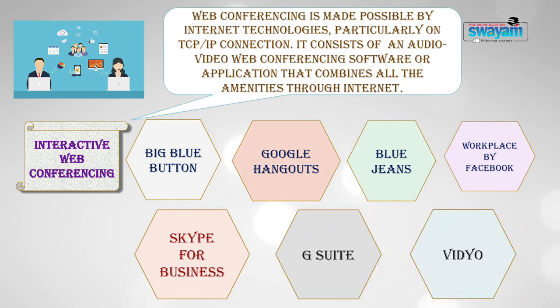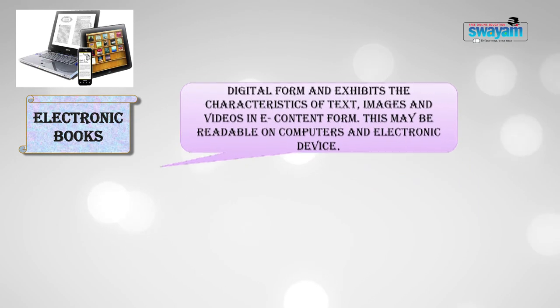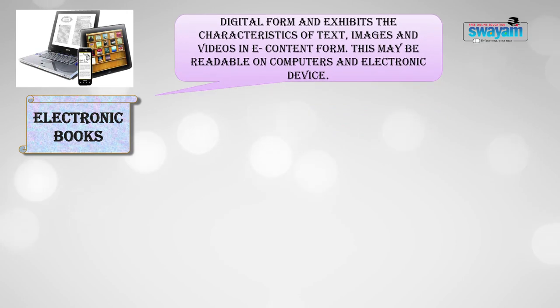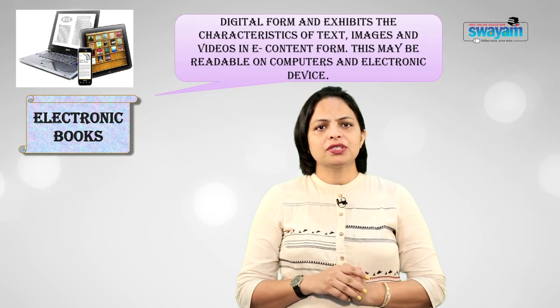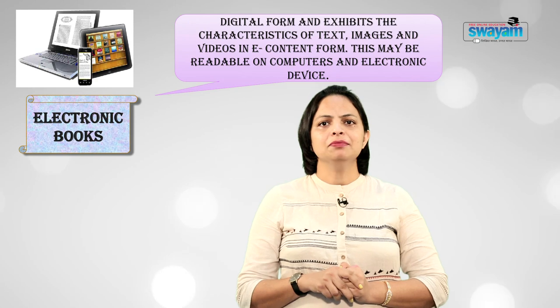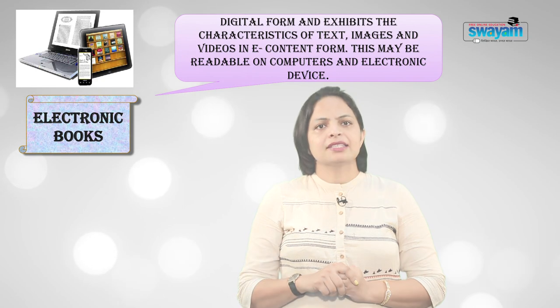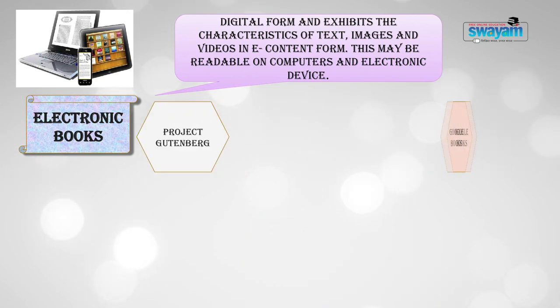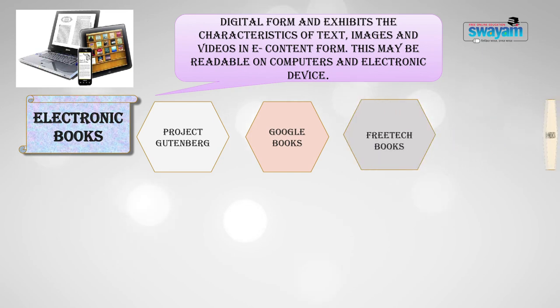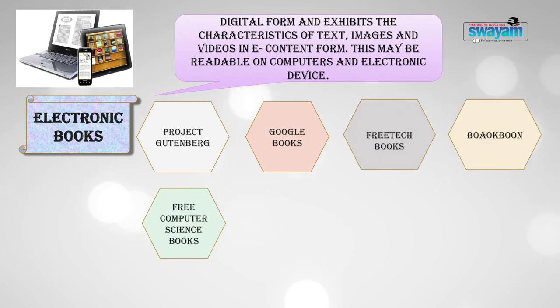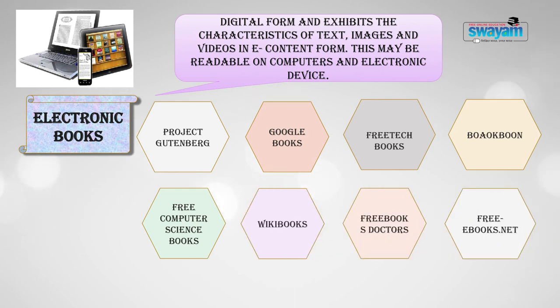Now we will discuss the next digital tool: electronic books, also known as e-books. The main feature of an e-book is that it is in digital form and exhibits characteristics of text, images, and videos in e-content form. It may be readable on computers and other electronic devices. Sites with free e-books include Project Gutenberg, Google Books, Free Tech Books, BookBoon, Free Computer Science Books, Wikibooks, Free Books Doctors, Free-eBooks.net, and Internet Archive.